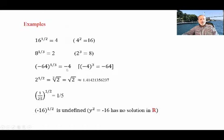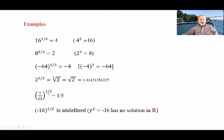Here are a few examples. 16 to the power 1/2 is 4, because 4 squared equals 16. One-eighth to the power 1/3 is 2, because 2 to the power 3 is 8. Negative 64 to the power 1/3 is negative 4, because negative 4 to the power 3 is negative 64. The square root of 2 is approximately 1.414. One over 25 to the power 1/2 is 1/5, because squaring 1/5 gives 1/25. Negative 16 to the power 1/2 is undefined because y squared equals negative 16 has no solution in R.